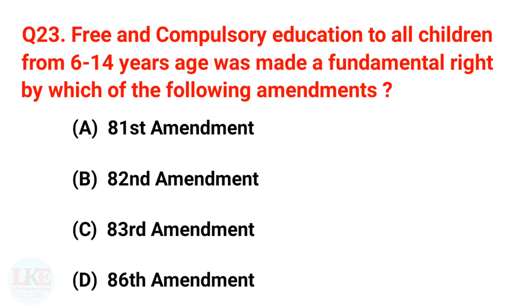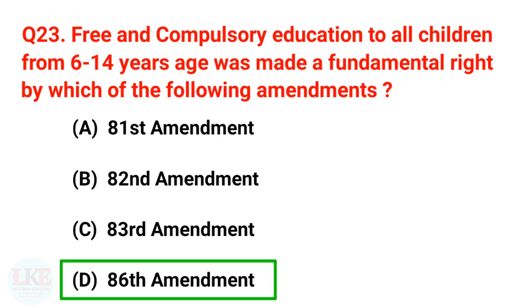Next question: Free and compulsory education to all children from 6 to 14 years of age was made a Fundamental Right by which amendment? The right answer is option D, the 86th Amendment.